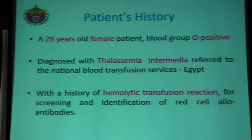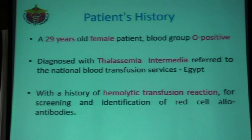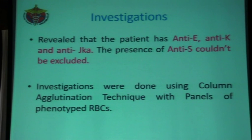In our red cell reference laboratory in the National Blood Transfusion Center, a female patient, 29 years old, blood group O-positive. She was diagnosed — fortunately — with thalassemia intermedia, not thalassemia major. She was referred to our center for screening and identification because she developed severe hemolytic transfusion reaction. She had been followed at another blood bank and came to us with a severe delayed hemolytic transfusion reaction. We performed screening, found it positive, and performed antibody identification. We found that the patient had developed four antibodies: anti-E, anti-KEL, anti-JKA, and anti-S was not excluded — four multiple antibodies, two of them with high-incidence antigens.